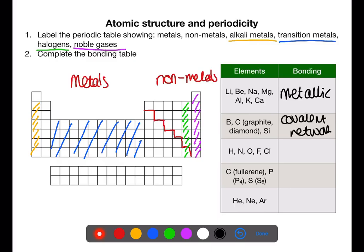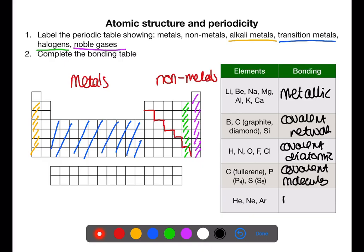Hydrogen, nitrogen, oxygen, fluorine, and chlorine are covalent molecules, specifically diatomic. Carbon is fullerene. Phosphorus P4 and sulfur S8 are all covalent molecules and you need to know their specific molecular formula. Helium, neon, and argon are all monatomic.